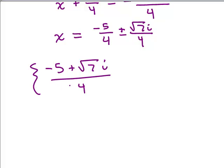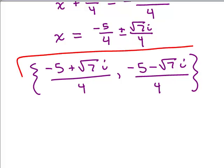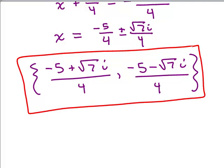Now, it's all over a common denominator, all over a common denominator. So I could just write negative 5 plus square root of 7i all over 4. Or you could leave it as negative 5 fourths plus square root of 7 over 4i, if you want to write it as a complex number, a plus bi form. And negative 5 minus square root of 7i all over 4. So two ways you could write the answer. And there we go.